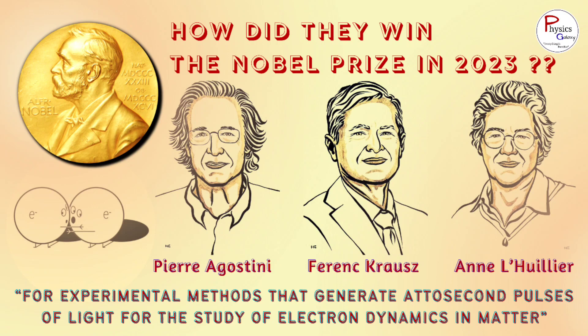Today, we are going to talk about Pierre Agostini, Ferring Cross and Anne L. Hillier, the winners of the 2023 Nobel Prize in Physics.